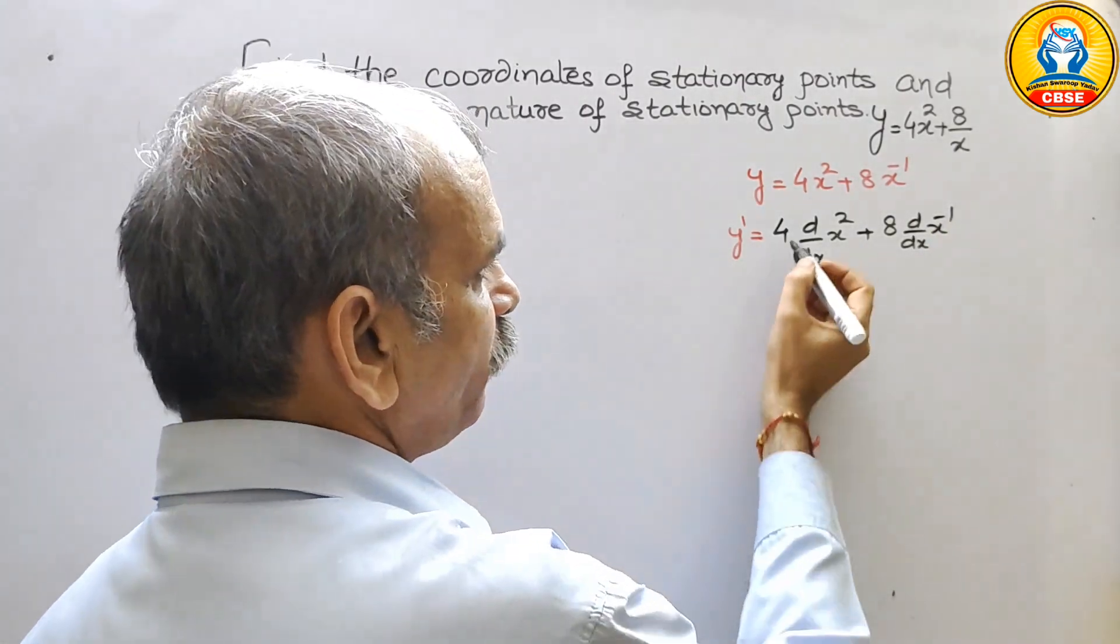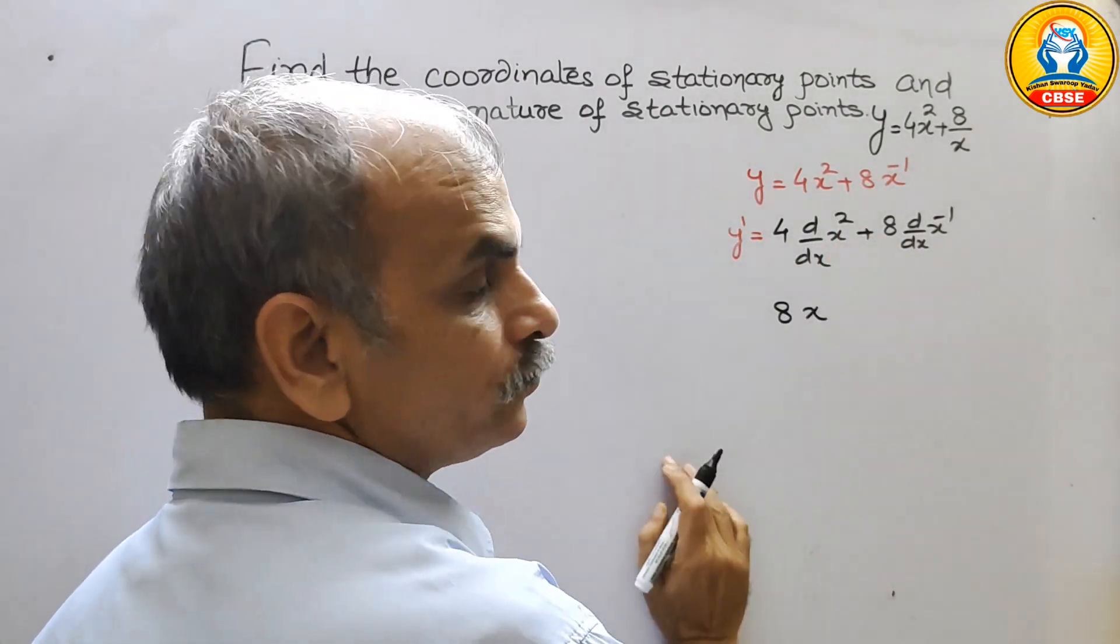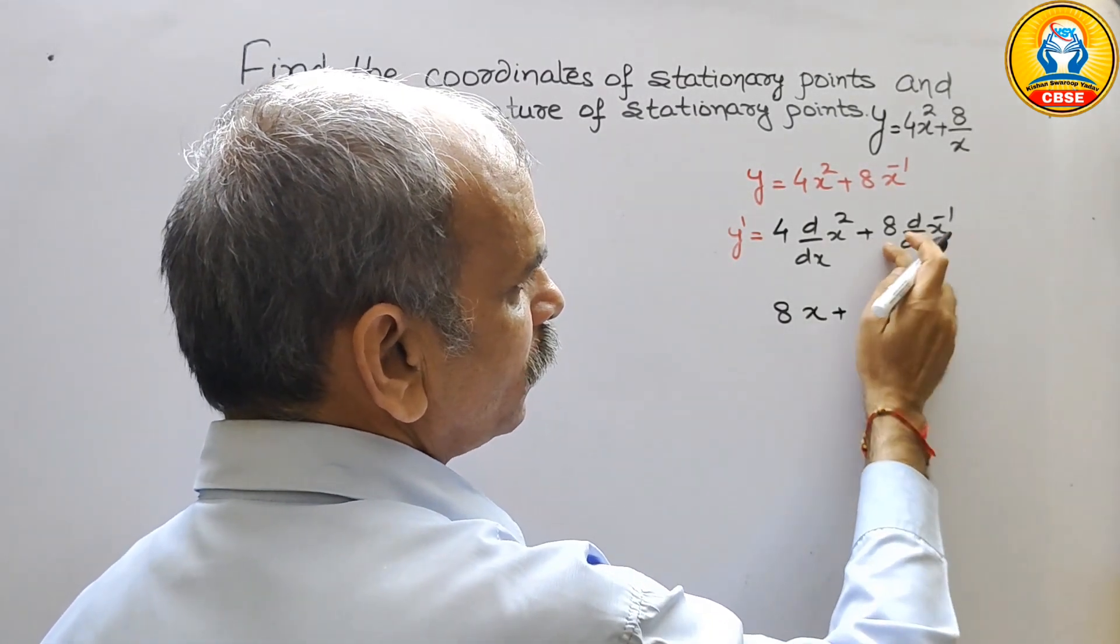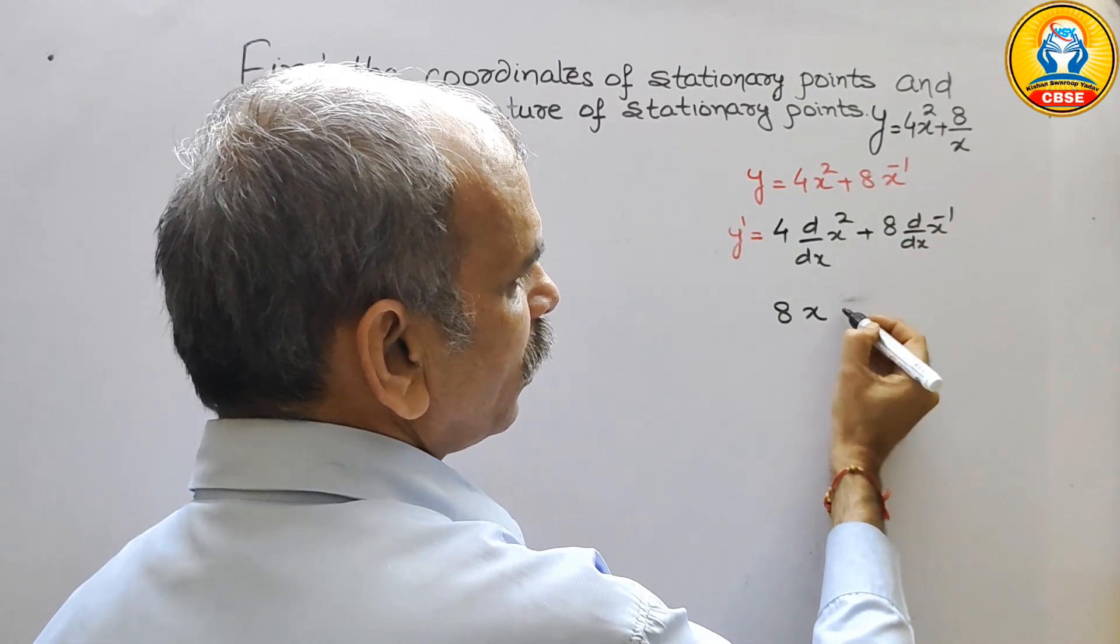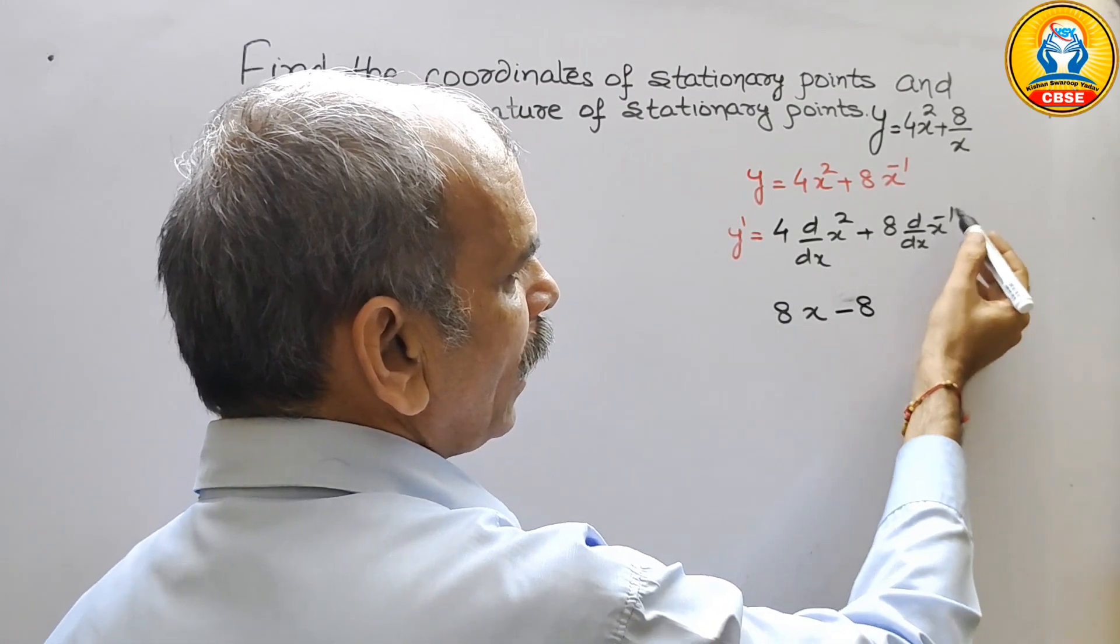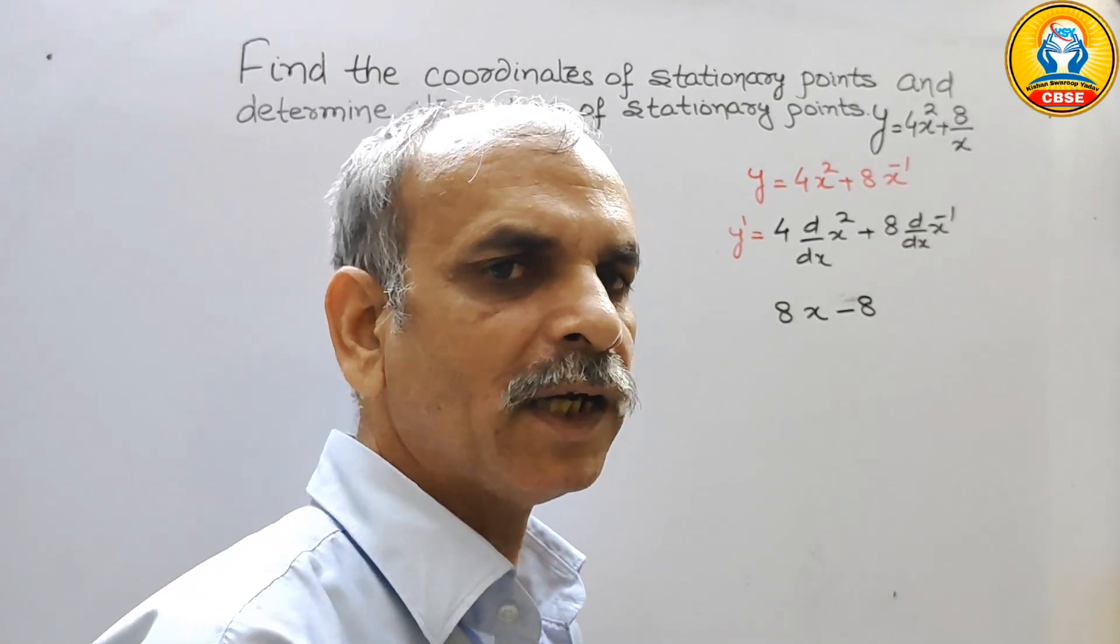Now if you differentiate we will get 4 into 2 is 8x. Here we will get minus 8 and power will be x to the power of minus 1 minus 1 is minus 2.